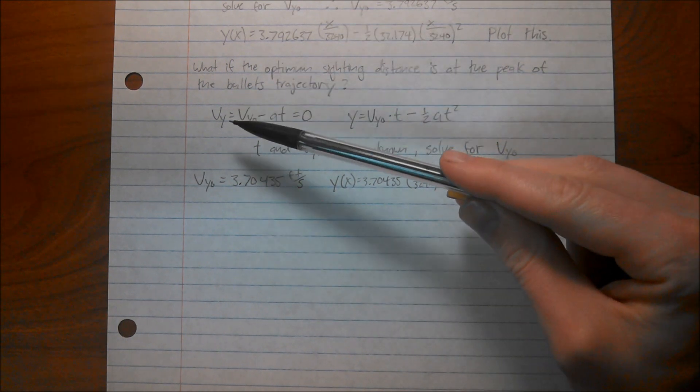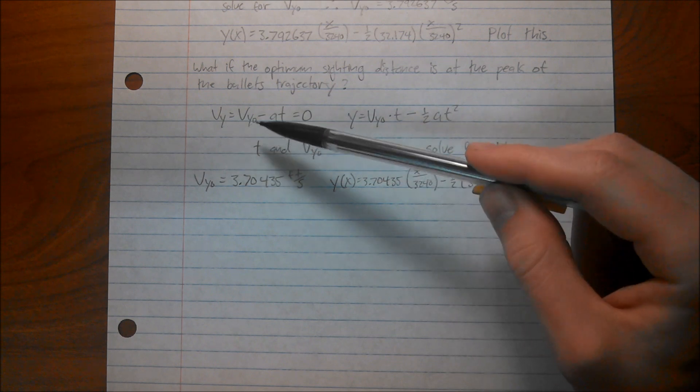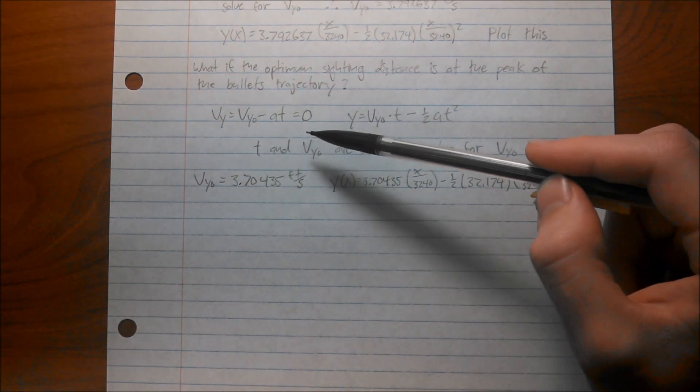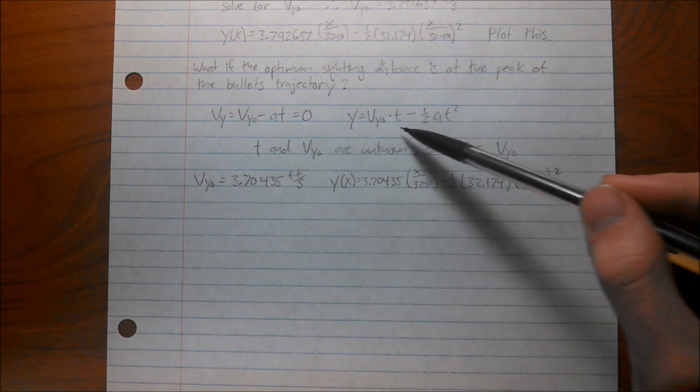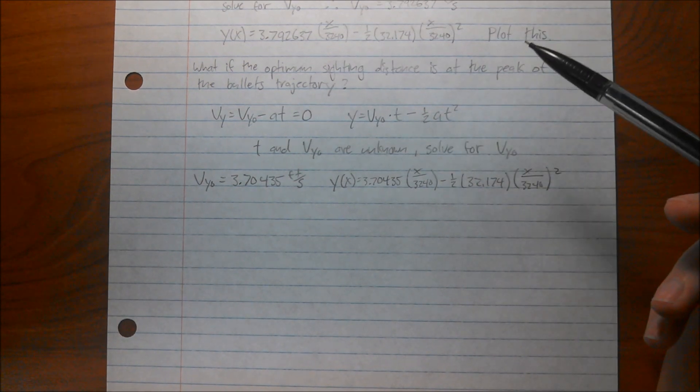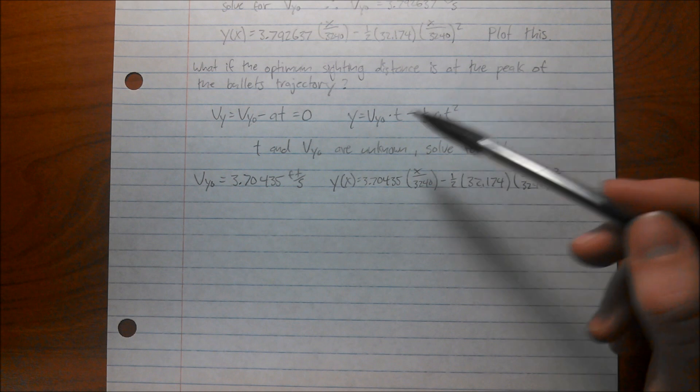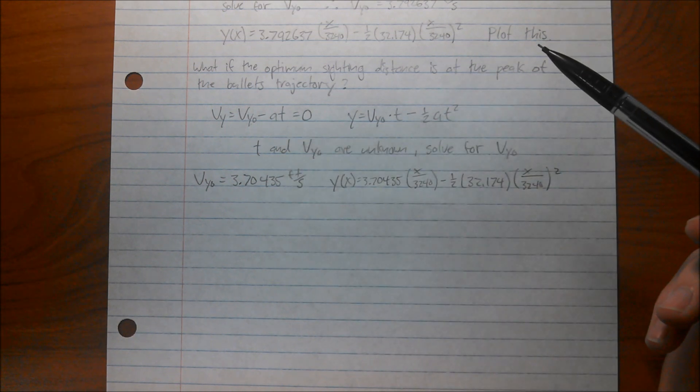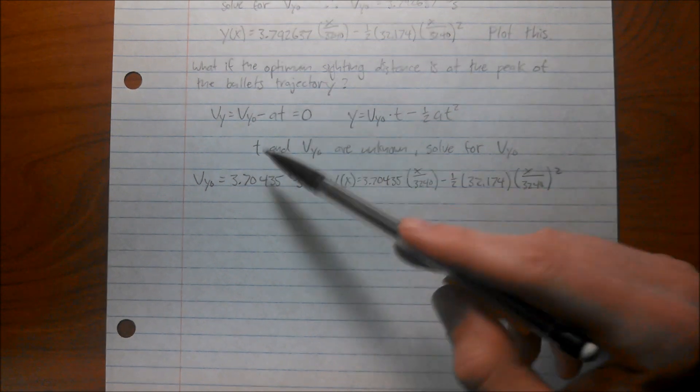So, we get the velocity in the y direction equals the initial velocity minus at, and we can go ahead and set that equal to 0, and then we have the same equation as before. Now we have two equations and two unknowns. We don't know t, and we don't know the initial velocity in the y direction, but we don't care about t.